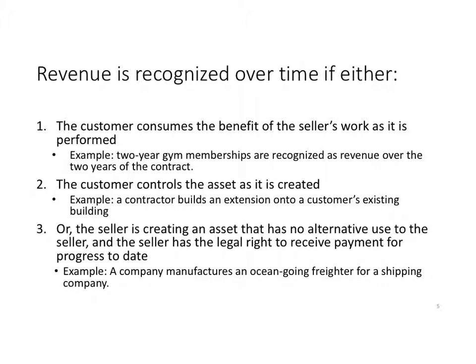Or the seller is creating an asset that has no alternative use to the seller, and the seller has the legal right to receive payment for progress to date. For example, if a company manufactures an ocean-going freighter for a shipping company under contract — they're not building it on spec — the seller has the right to recognize revenue over the construction period.